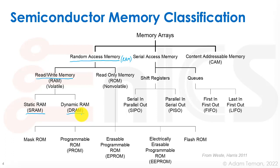Those are the main types of random access memory. However, there is another category called read-only memories or non-volatile memories. Nowadays they're not necessarily read-only, but they are much more often read from than written to. These are often called NVMs or non-volatile memories. They would usually be categorized differently than standard RAM.